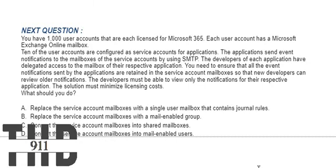Next one: you have 1,000 user accounts that are each licensed for Microsoft 365. Each user account has a Microsoft Exchange Online mailbox. Ten of the user accounts are configured as service accounts for applications. The applications send event notifications to the mailboxes of the service accounts using SMTP. The developers of each application have delegated access to the mailbox of their respective application. You need to ensure that all event notifications sent by applications are retained in the service account mailboxes so that the developers can review order notifications. The developers must be able to view only the notifications for their respective application. The solution must minimize licensing costs. What should you do?